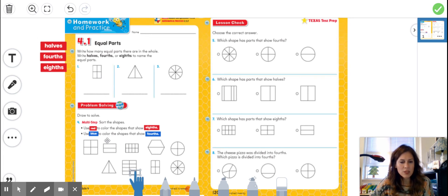Now down here, you're going to sort the shapes. You're going to use red to color the shapes that show eighths, and blue to color the shapes that show fourths. So you can choose any of your tools to color the ones that show eighths in red, and the ones that show fourths in blue. Remember, we are looking for equal parts.